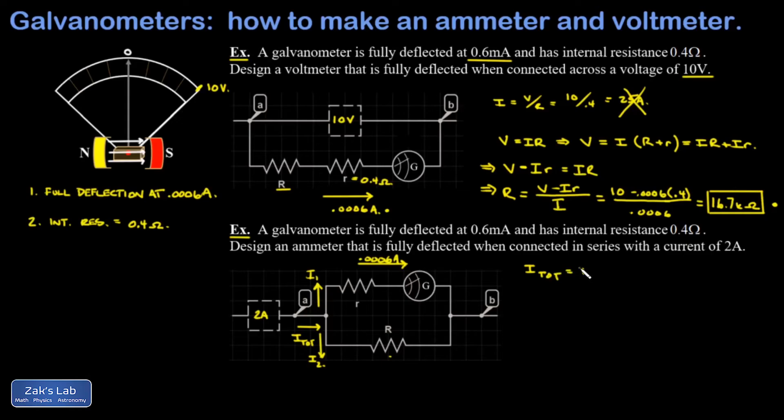I total equals I1 plus I2, and because this is a parallel combination, the voltage drop over the galvanometer branch must be the same as the voltage drop over this new resistor. So I set these equal, using Ohm's law: I1 little r equals I2 big R.